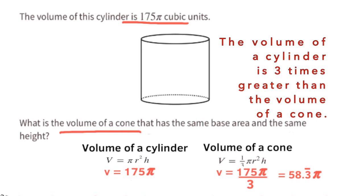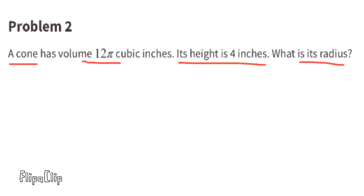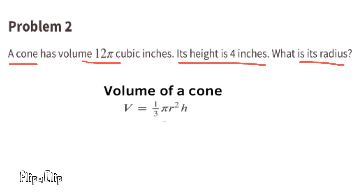Problem number two: A cone has volume 12 times pi cubic inches. Its height is 4 inches. What is its radius? The formula for the volume of a cone is 1/3 times pi times r squared times h. The information tells us that the volume is 12 times pi cubic inches and the height is 4 inches.